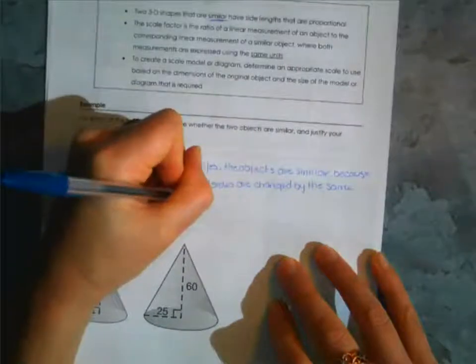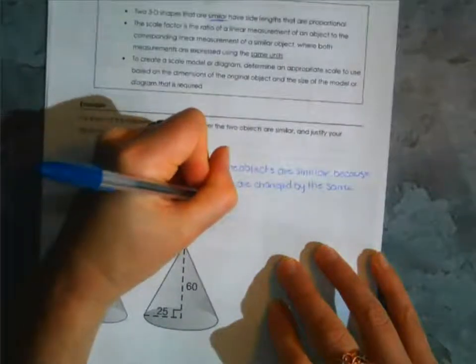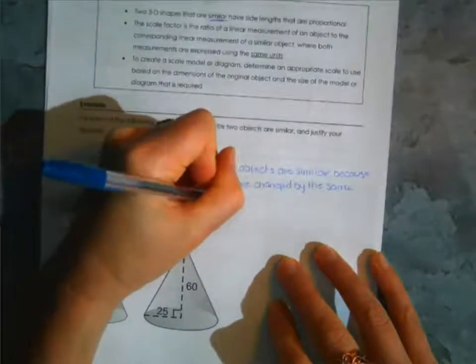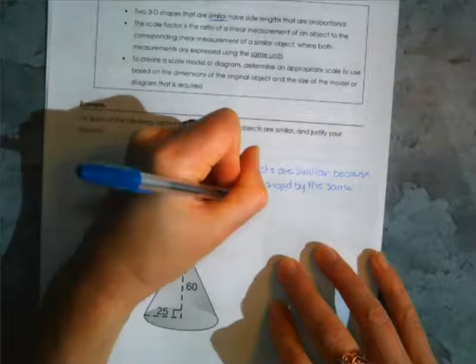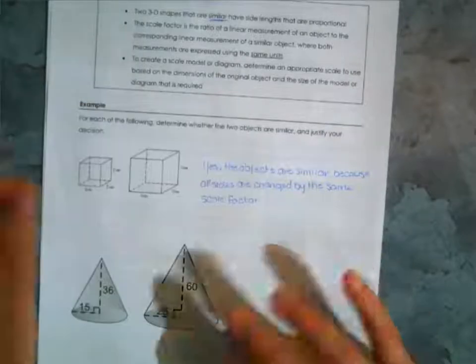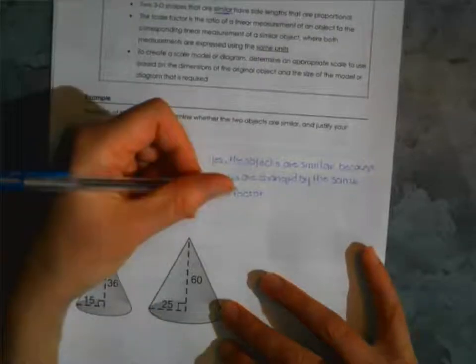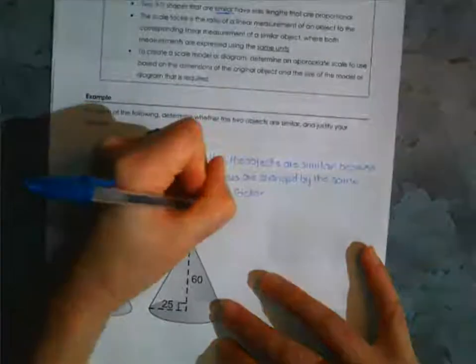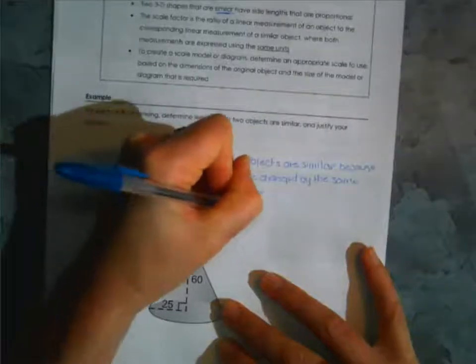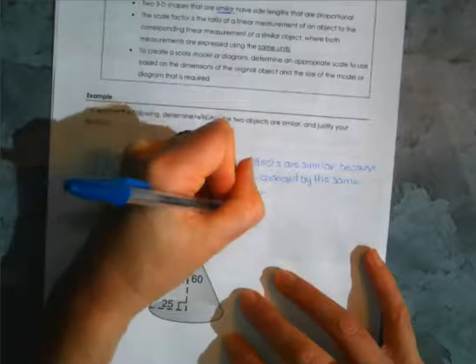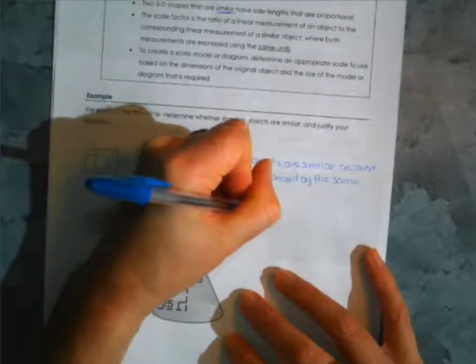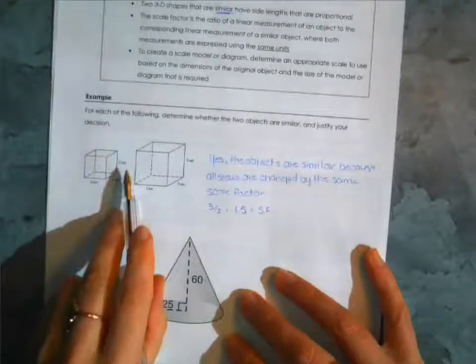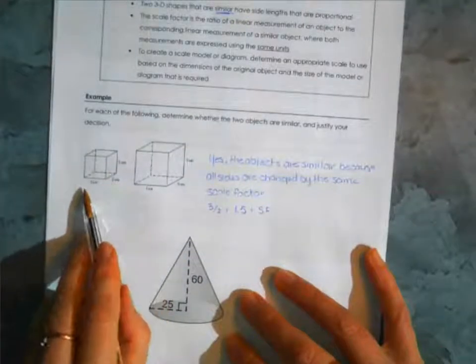You can double-check by doing diagram divided by original: 3 divided by 2 equals a scale factor of 1.5. All of the 2-centimeter sides have been multiplied by 1.5 to make 3 on all sides, confirming similarity.